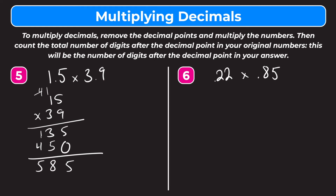Now let's put the decimal point in the correct place in the answer. We count the digits to the right of the decimal in the original numbers: we have 1 in 1 and 5 tenths and 1 in 3 and 9 tenths, giving us a total of 2. So our decimal point goes here, making our final answer 5 and 85 hundredths.